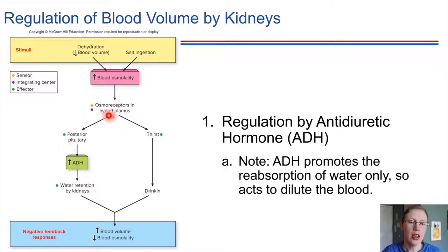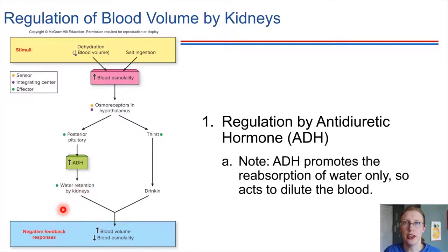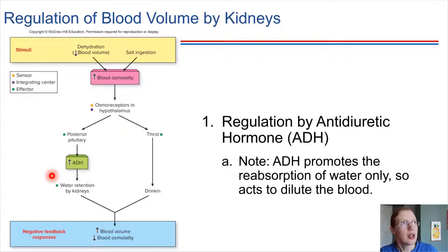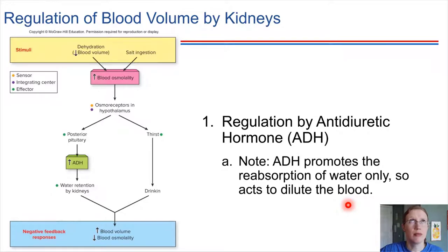There's also another pathway that gets activated. The posterior pituitary gland is going to increase production of ADH — antidiuretic hormone. That is a hormone that goes and acts on the kidneys in order to increase water retention. So instead of losing the water in urine, we're going to take the water back up. The urine is going to become more concentrated, and that water that was taken back up is going to be shuttled into the blood instead. ADH promotes the reabsorption of water only.